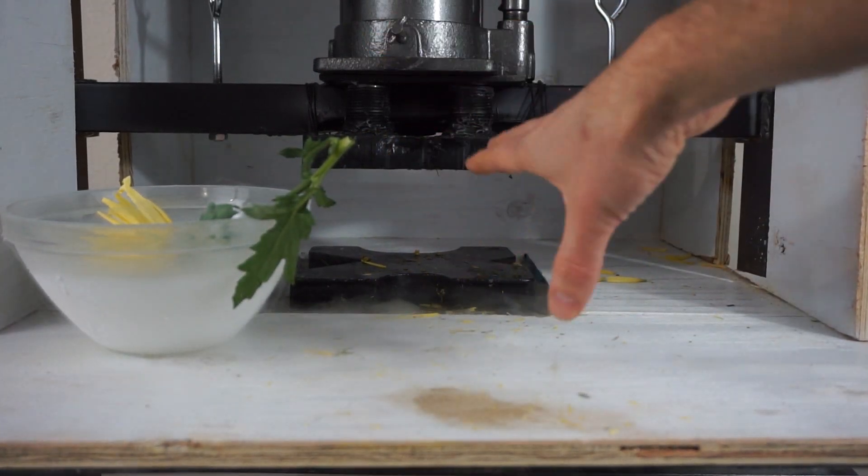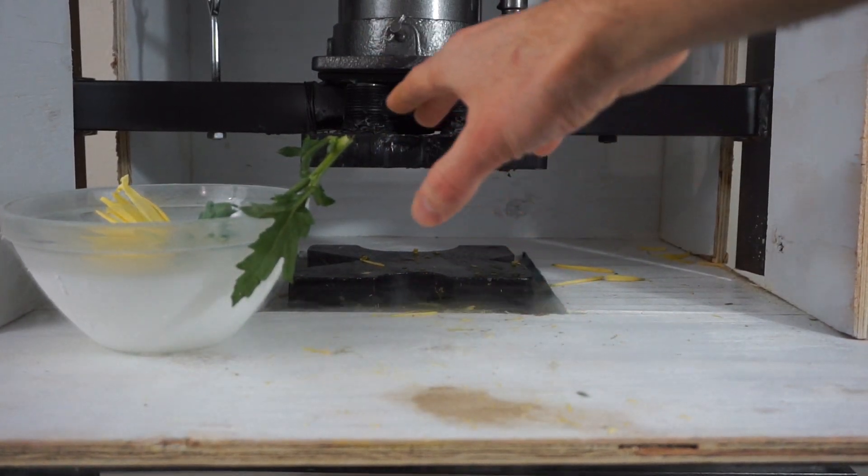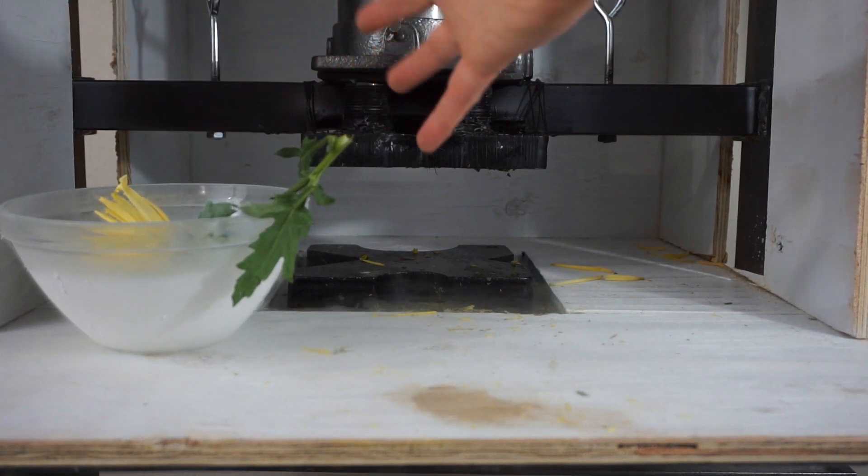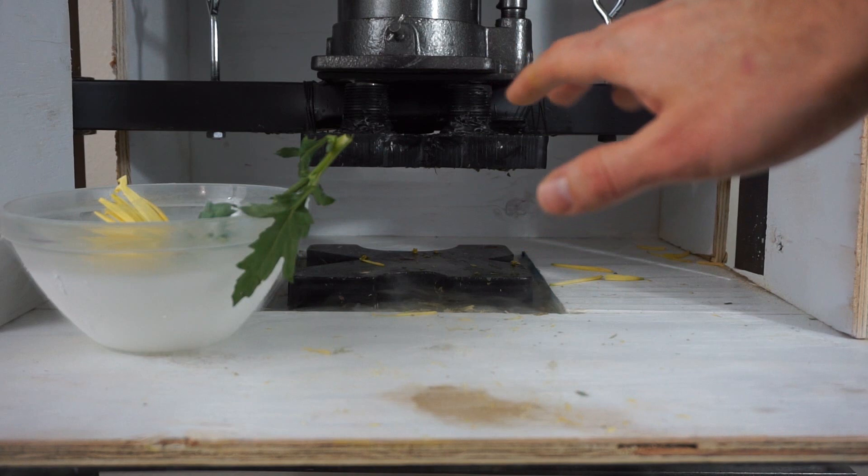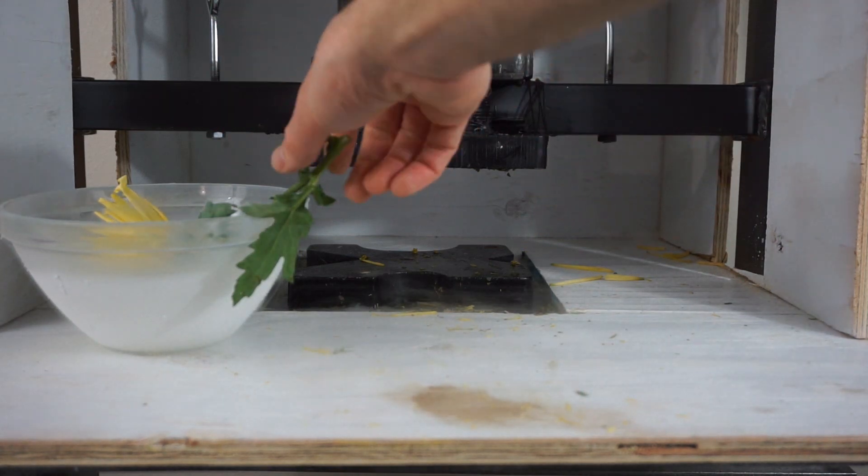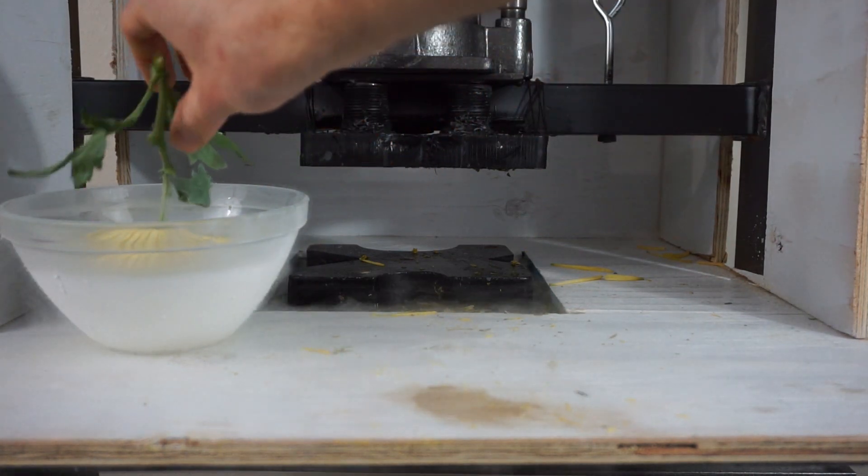Okay, so putting it in the hydraulic press, the flower cools off too quickly. Since it has a lot of surface area, it really cools off quickly when you put it in the press. So instead of doing that, I'm going to quickly pull it out of the liquid nitrogen and break it.